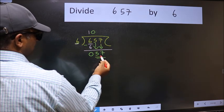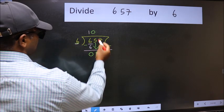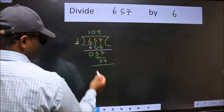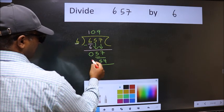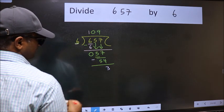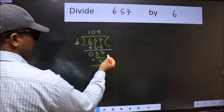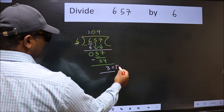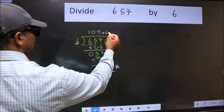Now 57. A number close to 57 in the 6 table is 6 nines 54. Now we should subtract. We get 3. No more numbers to bring it down, so we stop here. This is our remainder and this is our quotient.